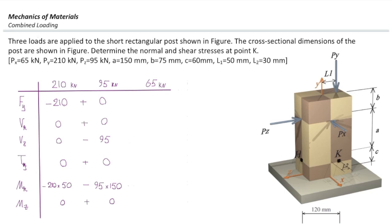The last applied force is PX. Moving it to the centroid, it produces a shear force VX = negative 65 kN (opposite to the X-axis), with VZ zero. Moving PX downward to the cut section produces a moment about the positive Z-axis, giving MZ = PX times A = 65 times 150 mm. The subsequent move along its axis produces no additional moment.